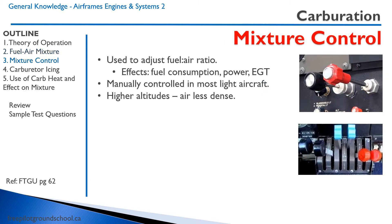The mixture control is connected to the carburetor and is used to adjust the fuel-air ratio. It affects the fuel consumption, the power, and the exhaust gas temperature. A leaner mixture will have a higher exhaust gas temperature. In most aircraft it is manually controlled, and you want to use the mixture control at high altitudes where the air is less dense to ensure that the fuel-air ratio is correct.